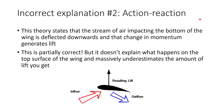A second incorrect explanation is action-reaction, which states that the stream of air impacts the bottom surface of the wing and is deflected downwards, and that change in momentum generates lift. This is actually partially correct — the bottom surface of the wing does deflect air downwards and generate some lift. But it doesn't explain what happens on the top surface of the wing, and it massively underestimates the amount of lift you get. Also, in this explanation, it really doesn't matter what shape the top of the wing is, so the lift you'd get would be the same in any case. So this explanation is only partially correct.